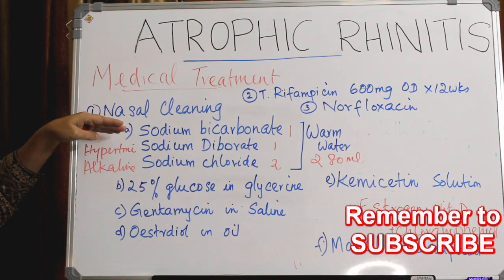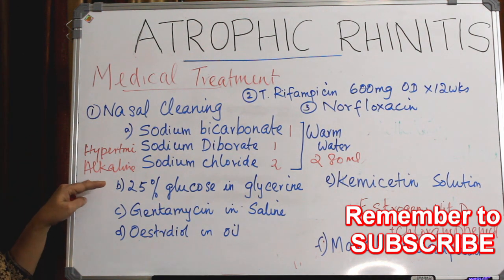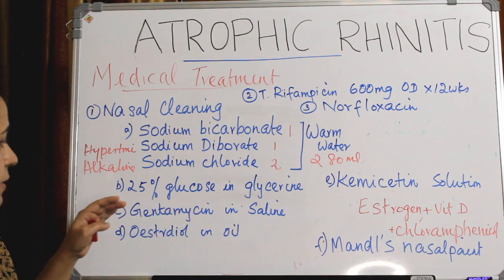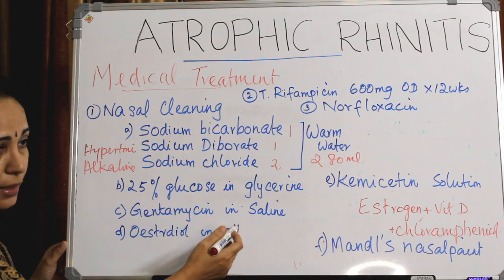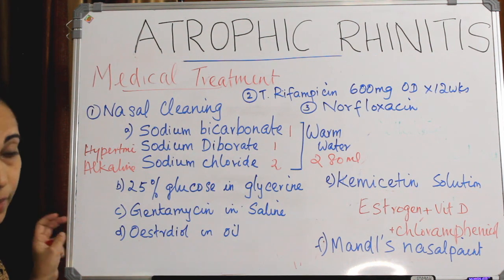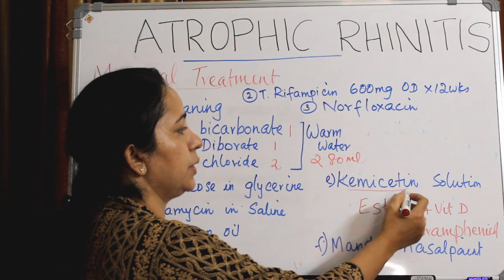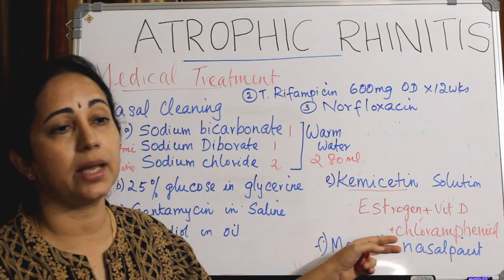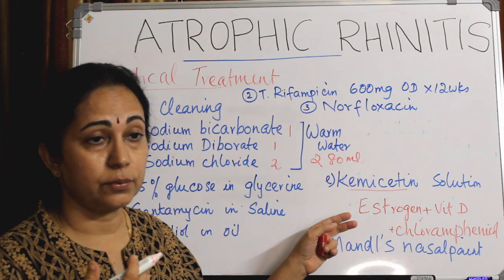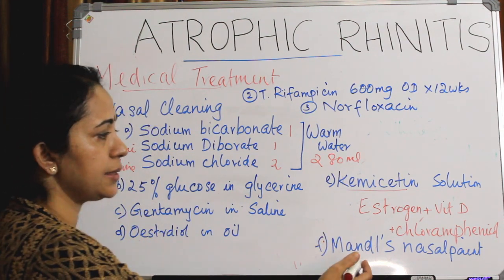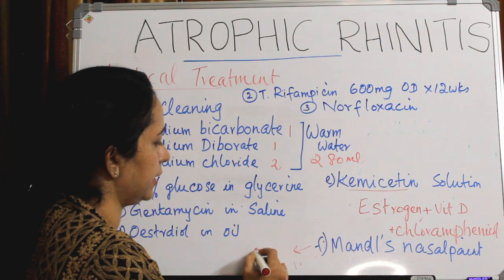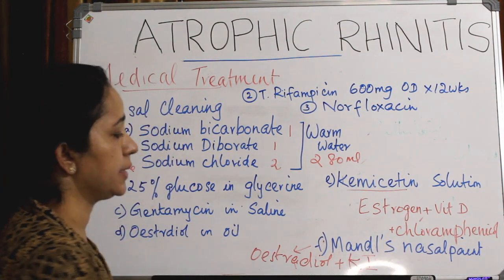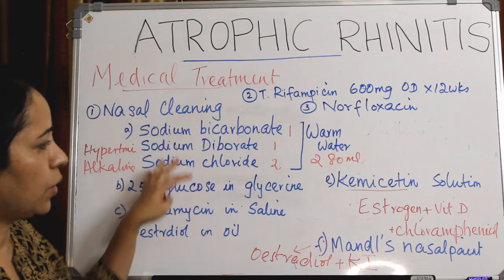After douching with this alkaline solution, you can paint the nose with 25% glucose in glycerin, because this will inhibit the growth of proteolytic organisms in the nasal cavity. You can also give gentamicin-insulin nasal douche, or estradiol in oil can be painted on the nasal mucosa. Another thing usually asked in exams is Chemisetin solution — a combination of estrogen, vitamin D, and chloramphenicol given for nasal douche. Mandl's nasal paint, which is estradiol in potassium iodide, can also be used for local application.